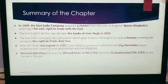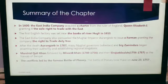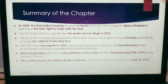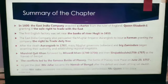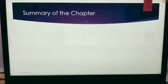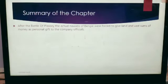Murshid Quli Khan, followed by Alivardi Khan, and then Siraj ud-Daula were the Nawabs of Bengal. The conflict between Siraj ud-Daula and the British led to the famous Battle of Plassey, which took place on 23rd June 1757, in which the British won. As per the deal, Mir Jafar became the Nawab of Bengal after the defeat and death of Siraj ud-Daula. When Mir Jafar protested, the company deposed him and installed Mir Qasim in his place.